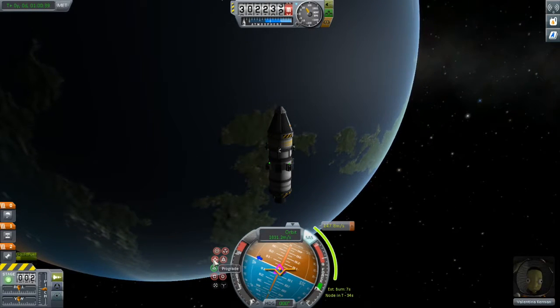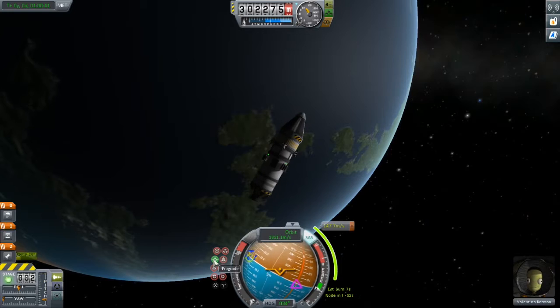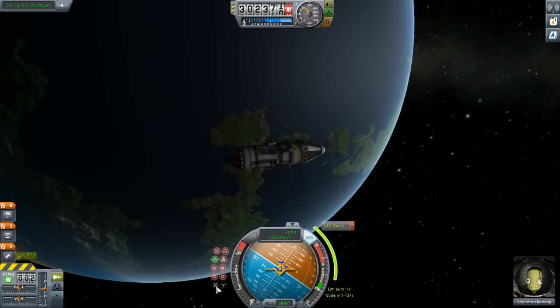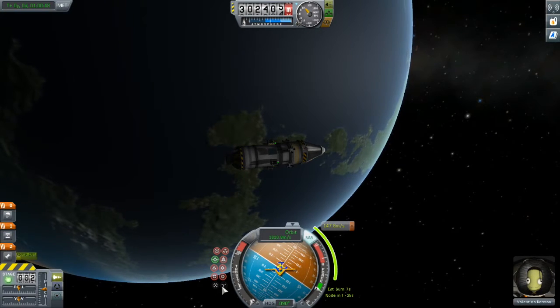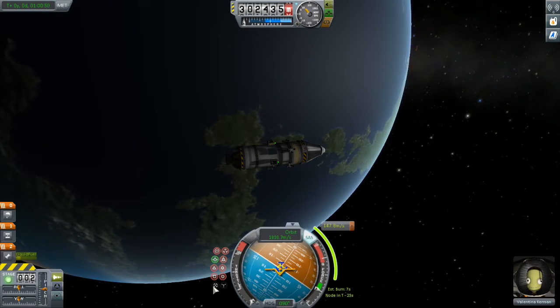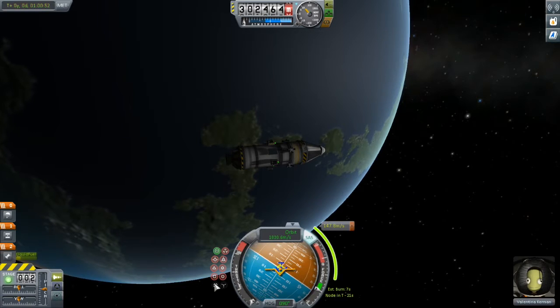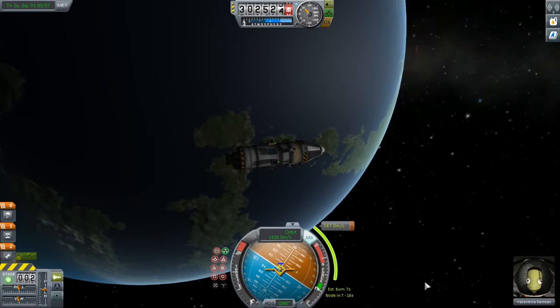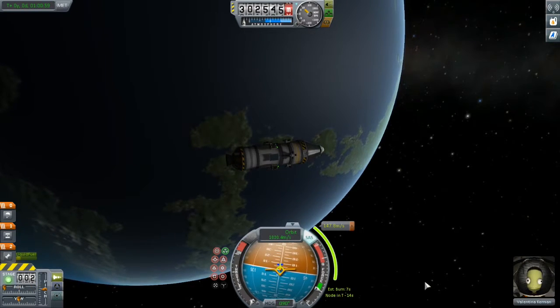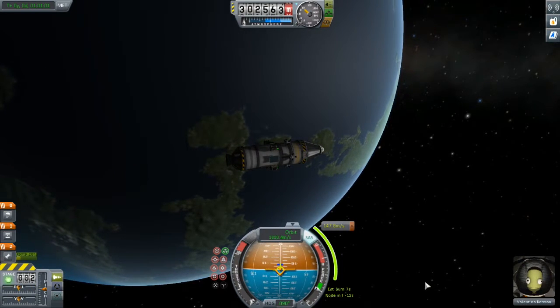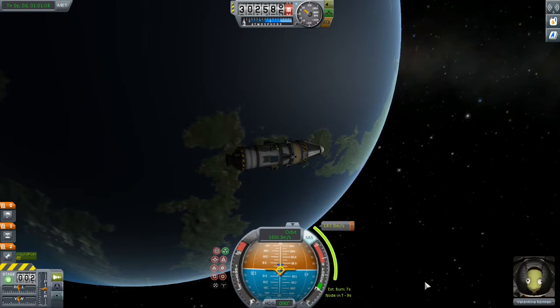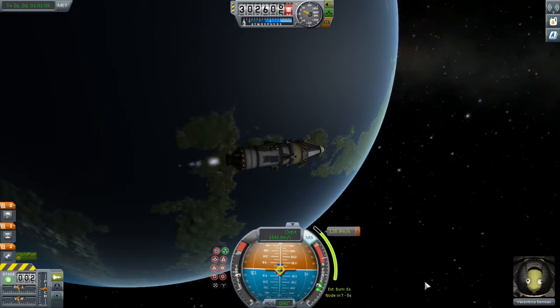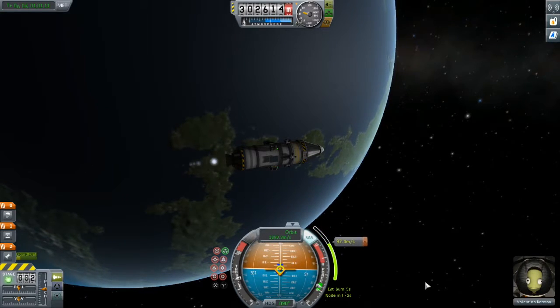Anyway, out here at apoapsis, all I have to do is point myself prograde once again and burn until my periapsis gets up around 300 kilometers. You can see that I've set myself up a maneuver node and this time I'm going to actually use the maneuver node so you can watch the burn from out here and enjoy the view from this higher altitude. You can see that the burn is about 148 meters per second. And again, stick around for the second part of this video. We'll talk about how we can calculate what that number is going to be.